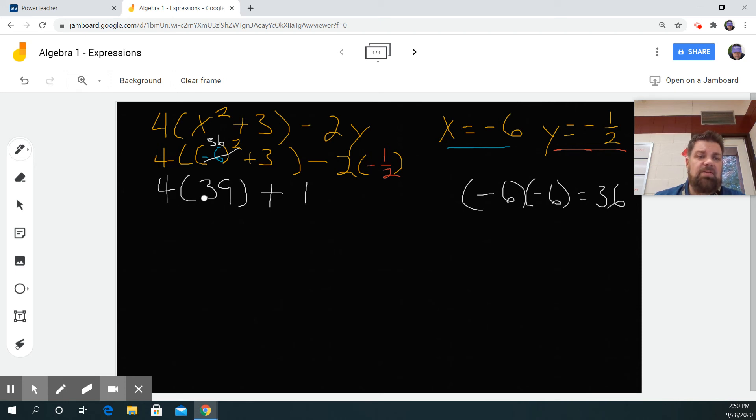Lastly, I'm going to multiply 4 times 39. That equals 156 plus my 1. So then my final answer is 157.